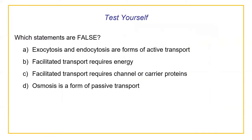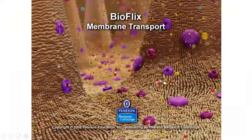Here's a quick test-yourself question: which of the following statements is false? Exocytosis and endocytosis are forms of active transport — that is true, they take energy. Facilitated transport requires energy — that is false. Remember, facilitated transport is a type of diffusion that just has a helper protein, either a channel or a gated protein. Facilitated transport requires channels or carrier proteins — yes, that is basically the definition. Osmosis is a form of passive transport — also true, because osmosis is just diffusion but specifically around water. So B is the only false statement.